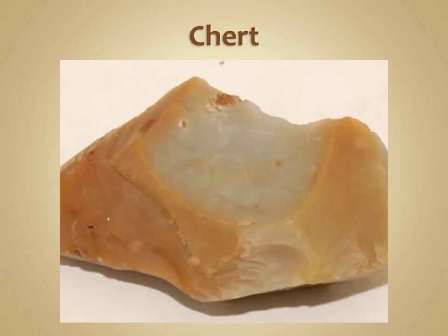Chert is another type of inorganic chemical rock. Instead of carbonate, chert is almost entirely composed of silica. It occurs in two principal forms: irregular or lumpy nodules within other rocks, or as a layered deposit much in the same way as layers of sedimentary rocks. The nodule form of chert forms through inorganic precipitation of silica, or microcrystalline quartz, via groundwater.